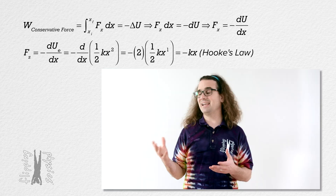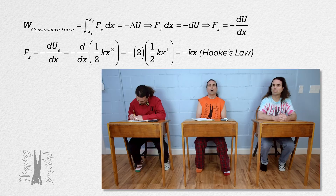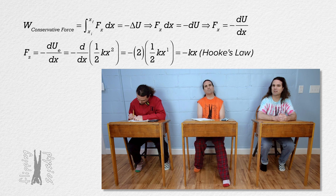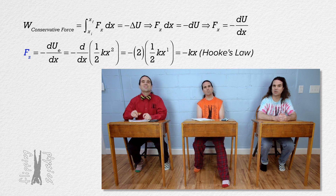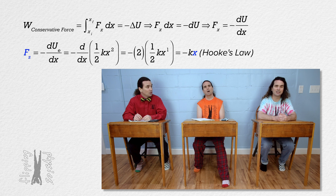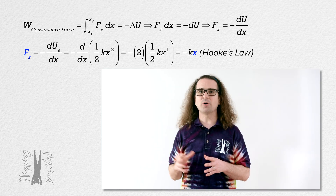And why is the negative in the equation? Because the spring force and the displacement from equilibrium position are opposite in direction. Correct. Thanks, Bo.